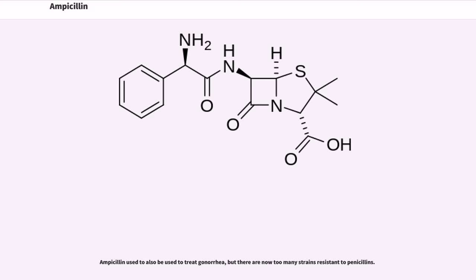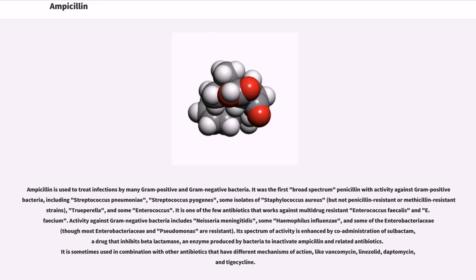Ampicillin is used to treat infections by many gram-positive and gram-negative bacteria. It was the first broad-spectrum penicillin with activity against gram-positive bacteria, including Streptococcus pneumoniae, Streptococcus pyogenes, some isolates of Staphylococcus aureus.